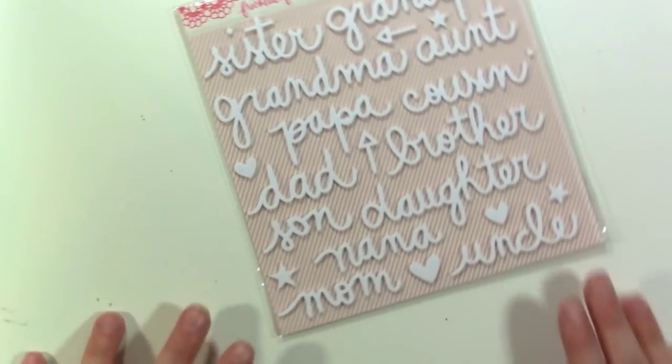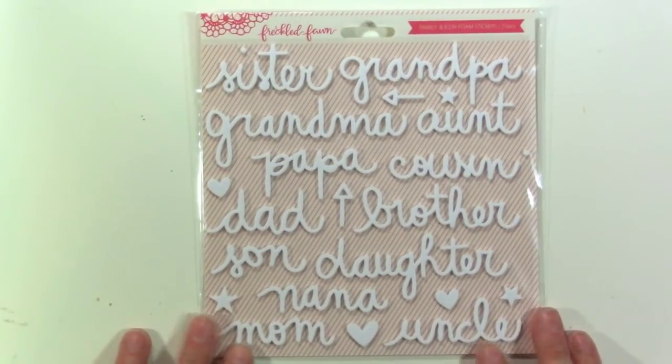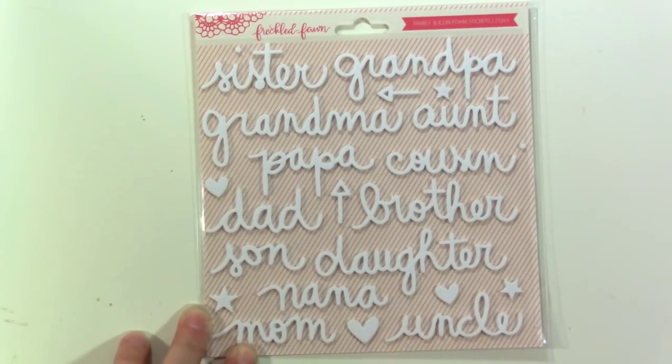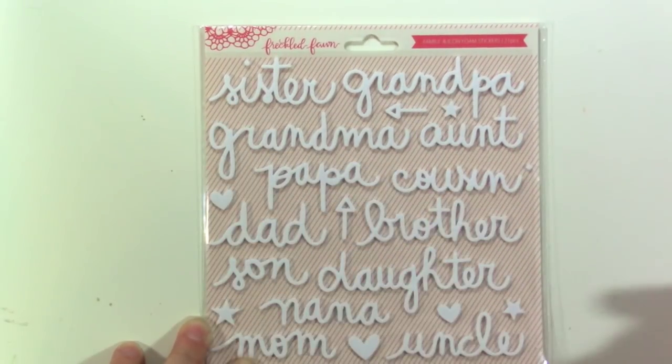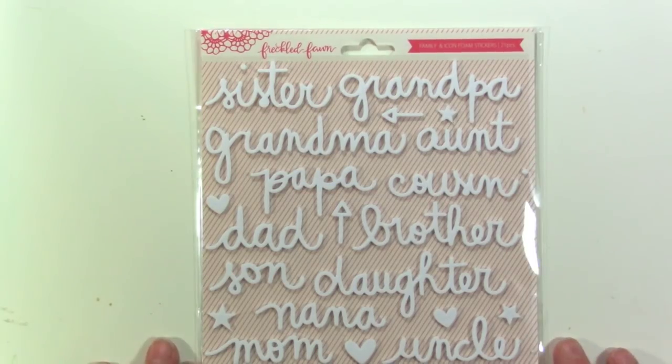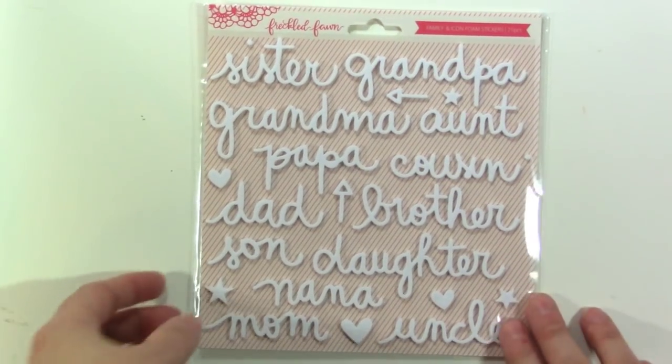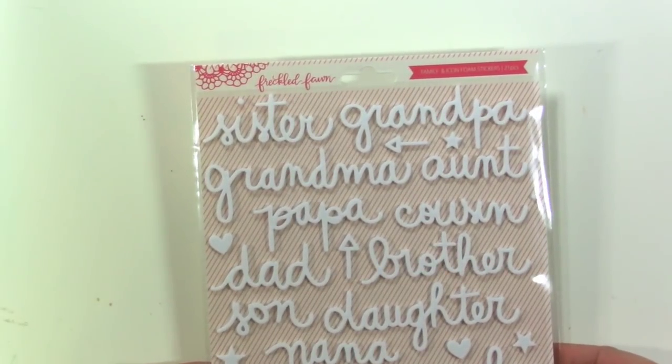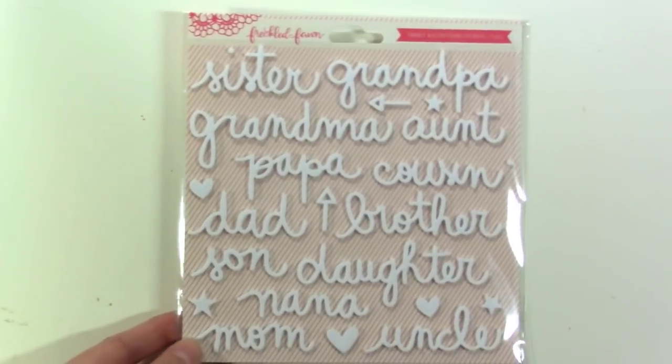We get these cool white words and I love these because they have different like family members on them. So there's a few icons but then it's like sister, grandma, grandpa, aunt, papa, cousin, dad, brother, son, daughter, nana, mom and uncle. So that's really cool. And there's lots of family events coming up with the holidays, right? So it makes sense to have something like this.